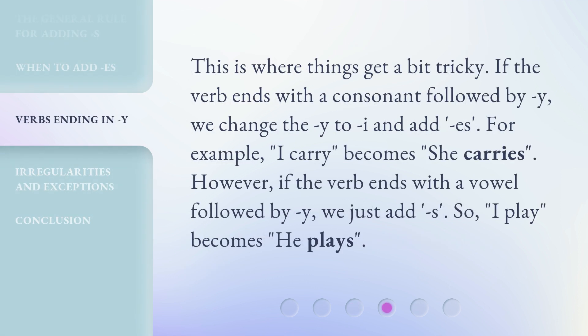This is where things get a bit tricky. If the verb ends with a consonant followed by Y, we change the Y to I and add ES. For example, I carry becomes she carries. However, if the verb ends with a vowel followed by Y, we just add S.